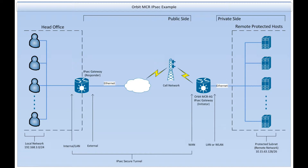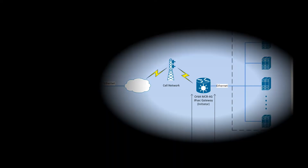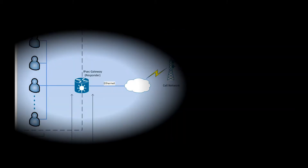With IPSec we will be able to secure all traffic going to and coming from the remote site, while also being able to route all traffic automatically with no port forwarding rules. IPSec tunnels always require an IPSec gateway on both sides of the tunnel. In our example, we have an Orbit at the remote site. At the local site, this could be another Orbit or some other IPSec gateway appliance.